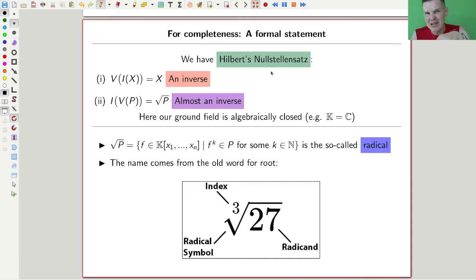This really only works over algebraically closed fields for the reasons that I tried to illustrate on the previous slide. Sometimes with the real numbers, polynomials don't tend to have the roots that they are supposed to have, and this kind of gets then a little bit wrong.